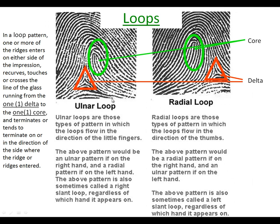Alright, when we look at loops, remember we talked about the difference between ulnar and radial loops, and we also discussed the fact that on any loop, you're going to find one delta - the loop is a result of the formation of one delta. We talked about the difference between the core and the delta. The core is the very center of the loop or the whirl, whereas the delta is the triangular piece that causes that formation to be apparent.